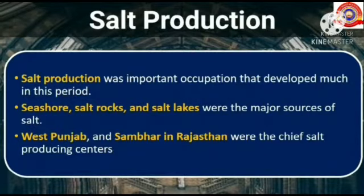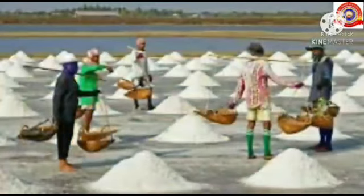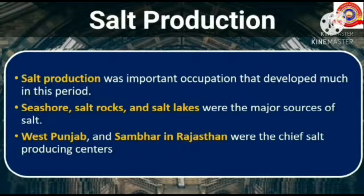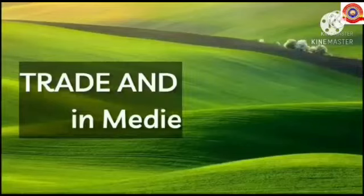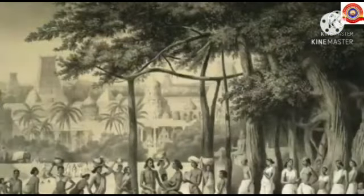Next, salt production. Salt production was an important occupation that developed much in this period. Seashore salt rocks and salt lakes were the major sources of salt. West Punjab and Sambhar in Rajasthan were the chief salt-producing centers.